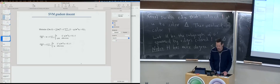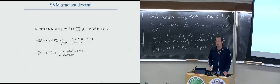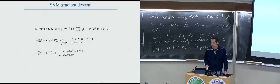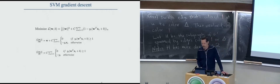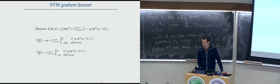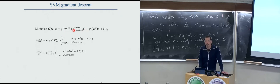In the support vector machine, what we're minimizing is two terms. This term is the hinge error. This term is, of course, the size of the weights, which we are simultaneously trying to minimize both of these. That's our loss function.